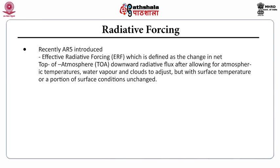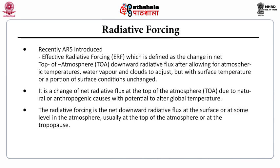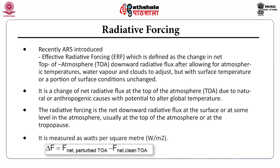Effective radiative forcing is defined as the change in net top of atmosphere (TOA) downward radiative flux, after allowing for atmospheric temperatures, water vapor and clouds to adjust, but with surface temperature or a portion of surface conditions unchanged. It is a change of net radiative flux at the top of atmosphere due to natural or anthropogenic causes with potential to alter global temperature. The radiative forcing is the net downward radiative flux at the surface or at some level in the atmosphere, usually at the top of the atmosphere or at tropopause, and it is measured in Watt per square meter.